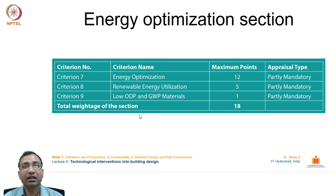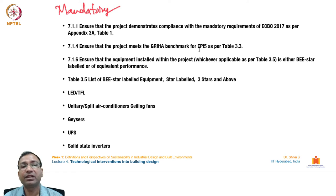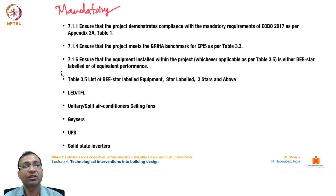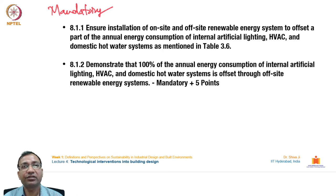Mandatory energy optimization points include: ensuring compliance with ECBC 2017 mandatory requirements; meeting the GRIHA benchmark EPI as per Table 3.3; ensuring all applicable equipment is BEE star-labeled or of equivalent performance. The BEE star-rated equipment list includes LED and TFL lighting, split and unitary air conditioners, ceiling fans, geysers, and UPS systems.